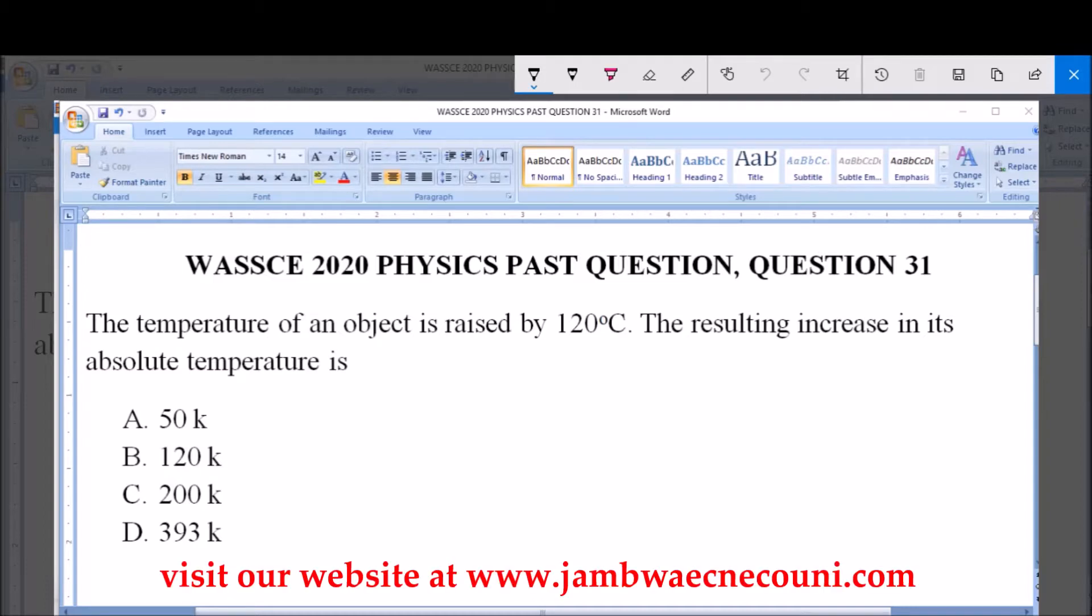The temperature of an object is raised by 120 degrees Celsius. The resulting increase in its absolute temperature is: A. 50 Kelvin, B. 120 Kelvin, C. 200 Kelvin, and D. 393 Kelvin.